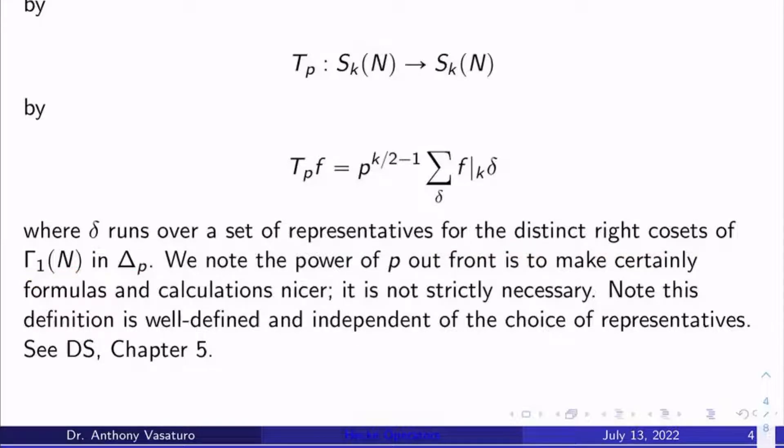So you're taking f. You're applying the bar sub k delta operator to it for all delta running over a set of distinct representatives for distinct right cosets gamma sub 1 of n in delta p. You're summing them all up and you're multiplying by this power of p out front. The power of p out front is generally to make certain formulations and calculations nicer. It's not strictly necessary. I've even seen it not being there.